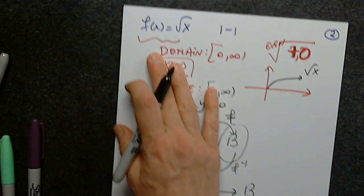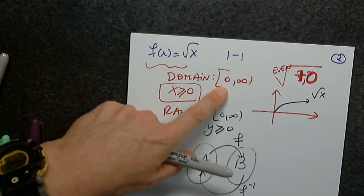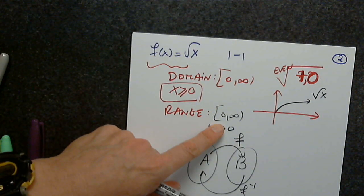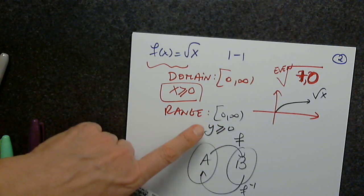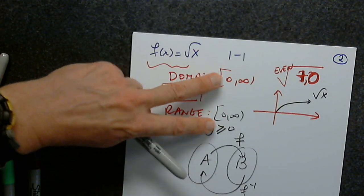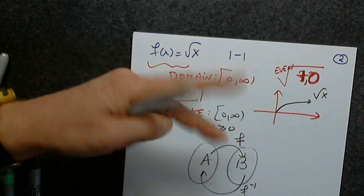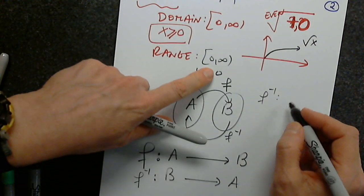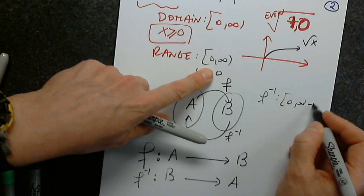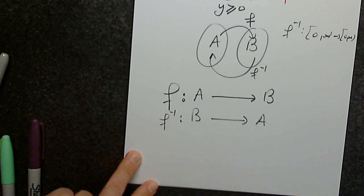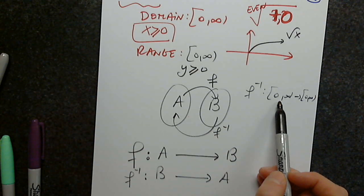Coming back to our function: if the domain of f(x) = √x is [0, ∞) and the range is [0, ∞), the domain of F inverse is the range of F, and they have to be swapped. So F inverse will be defined on [0, ∞) taking values in [0, ∞). After we find F inverse, we will have to write x ≥ 0.